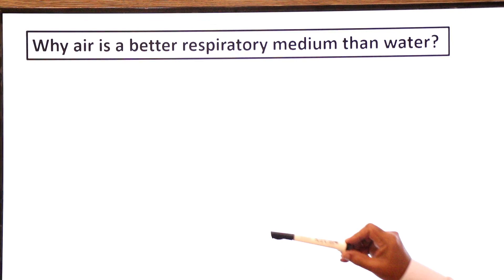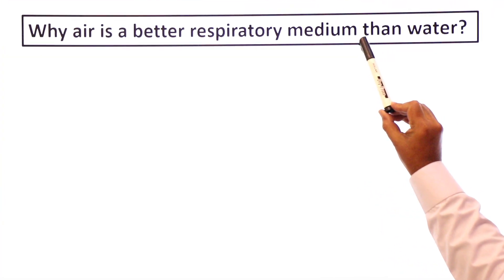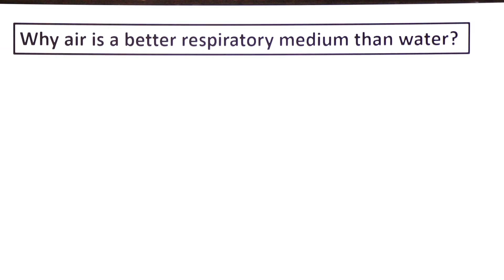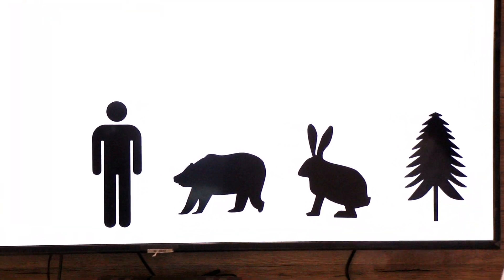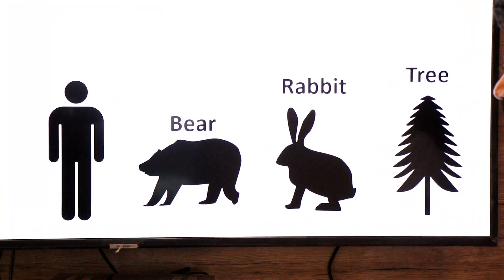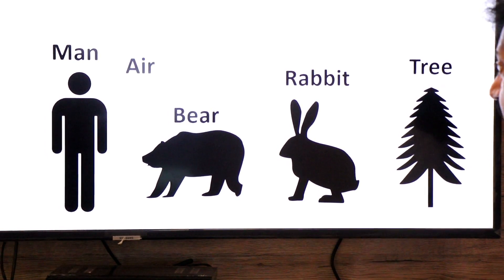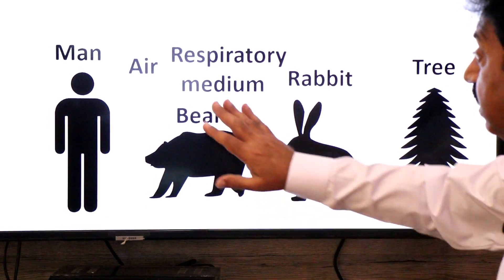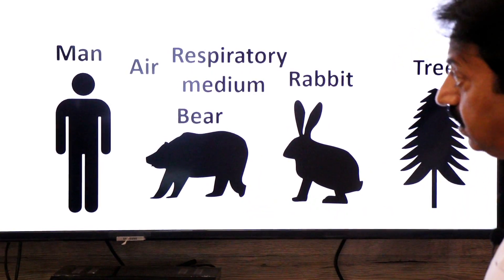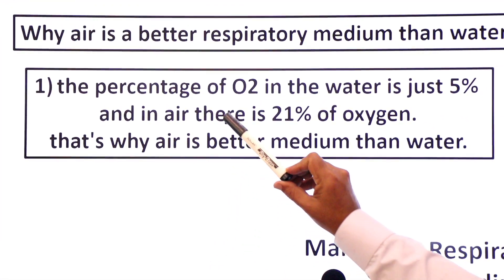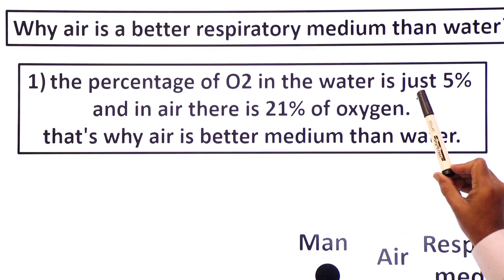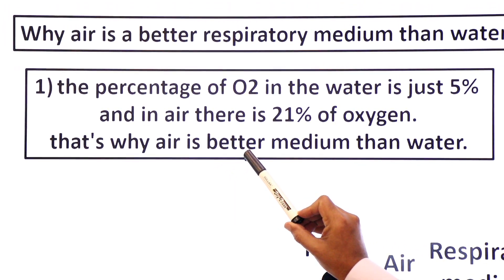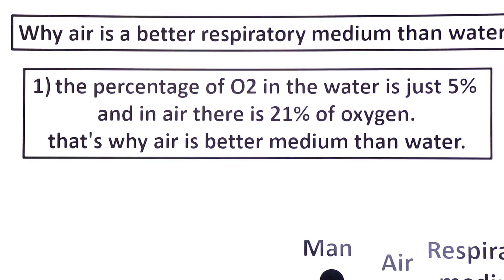Now, there is a question: Why is air a better respiratory medium than water? If we compare, why is air a much better respiratory medium for animals or organisms? Again, the same clip art - trees, rabbit, bear, man. Their respiratory medium is air. They exchange gases with air, and we say air is a much better respiratory medium than water. Let's see why. This is the first reason: The percentage of oxygen in water is just 5%, and in air there is 21% oxygen. That is why air is a better respiratory medium than water.